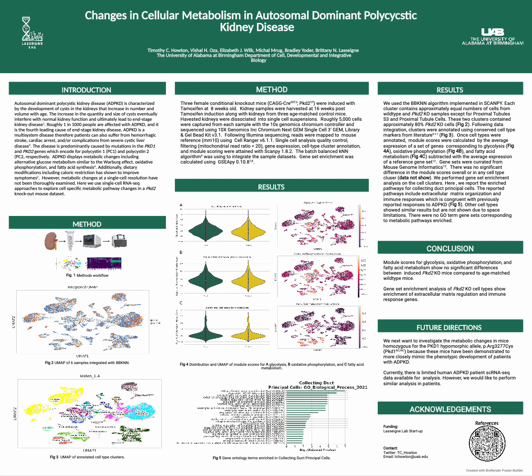Autosomal dominant polycystic kidney disease, or ADPKD, is characterized by the development of cysts in the kidneys that increase in number and volume with age. The increase in quantity and size of cysts eventually interferes with normal kidney function and ultimately leads to end-stage kidney disease. Roughly 1 in 1,000 people are affected with ADPKD, and it is the fourth leading cause of end-stage kidney disease.